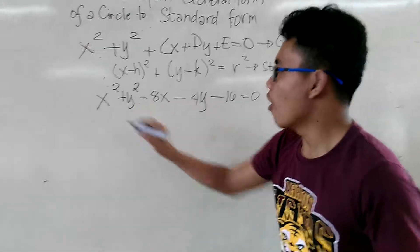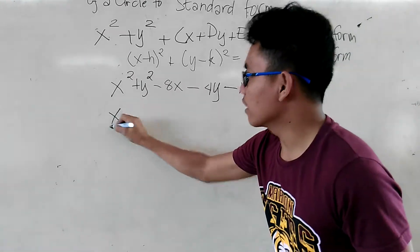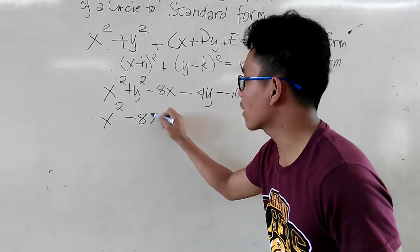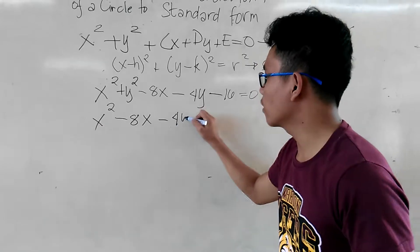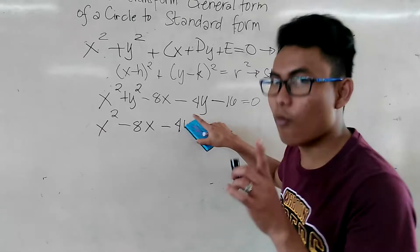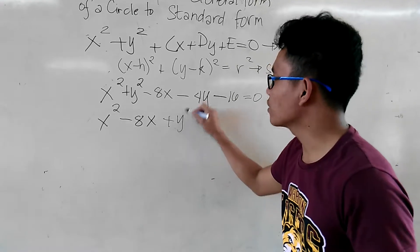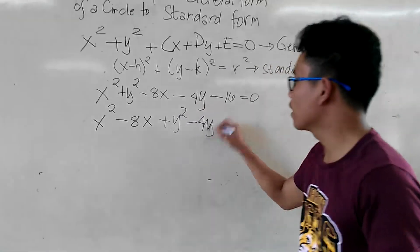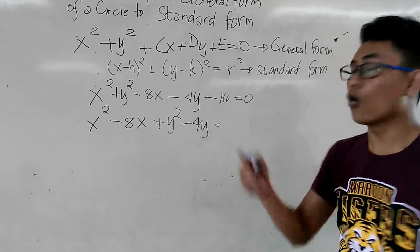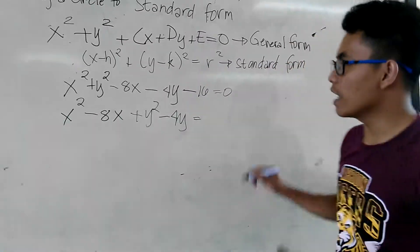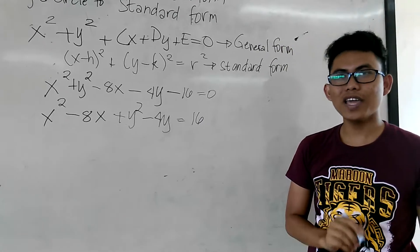So we have, of course, pang samasamahin natin yung magkapariang variable. With x squared minus 8x. No, sorry. May y squared pala. So we have, plus y squared minus 4y. Then, is equal to yung negative 16, transfer sa tikas, magiging positive 16 na po.